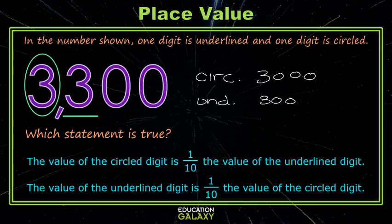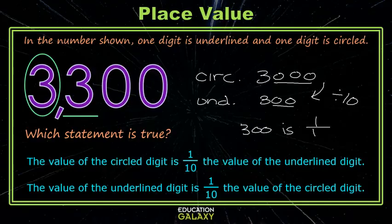So, how do I get from my circle digit to my underline digit? Well, this one has three zeros, and this one has two zeros. We know that I divided by 10. In other words, my underline digit, 300, is one-tenth of 3,000. Let's see if that matches one of our statements. Circle digit is one-tenth underlined. No, that's the other way. The underline digit is one-tenth of the circle digit. That's the correct answer.